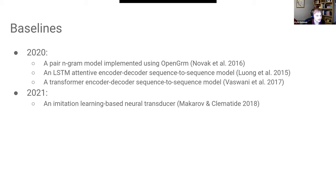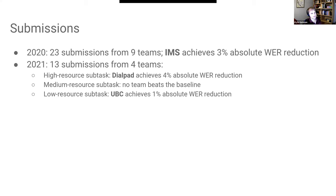In 2021, we used the second-best system from the shared task: an imitation learning-based neural transducer implemented in DINET. In the first year, we got 23 submissions — incredible — from nine teams, and the best team achieved a 3% absolute word error reduction. In 2021, we got 13 submissions from four teams — fewer teams and fewer submissions, but still good participation overall.